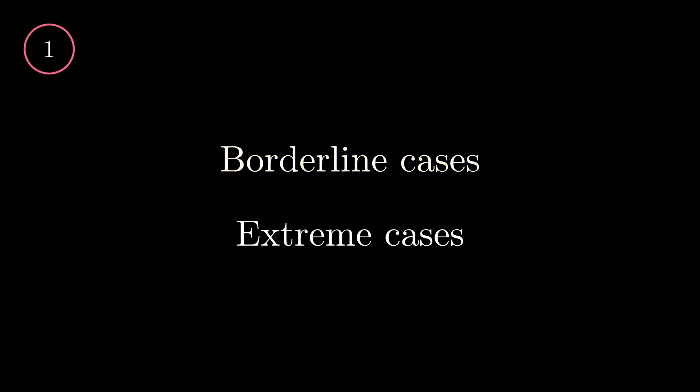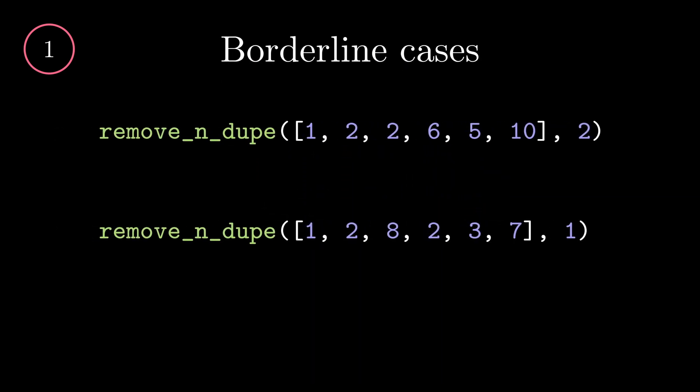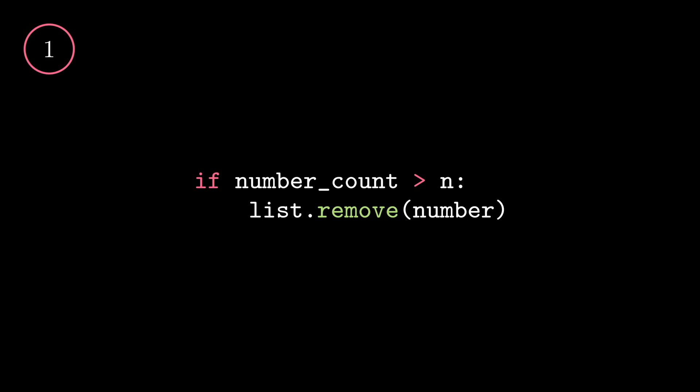When you create your examples, it is good to have both borderline and extreme cases. I created two cases that are hovering around our boundary condition and derived that it will return the following lists. Through this, it is evident that our condition for deleting elements should look something like this in pseudocode. Here we want to remove the number in our original list if it has appeared more than n times, but not equals to n times or less. Exactly like how the problem describes, which is why we use the greater than inequality.